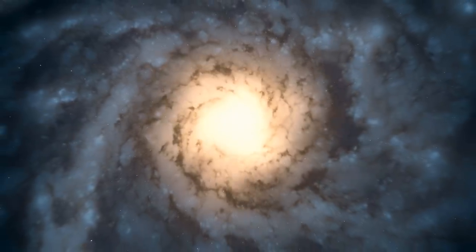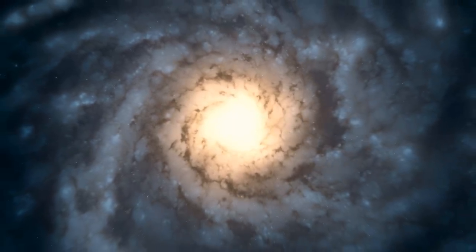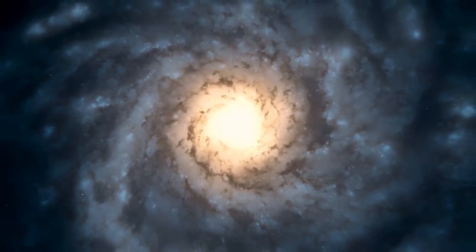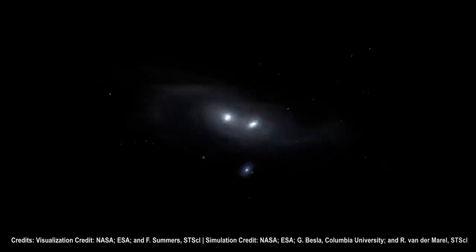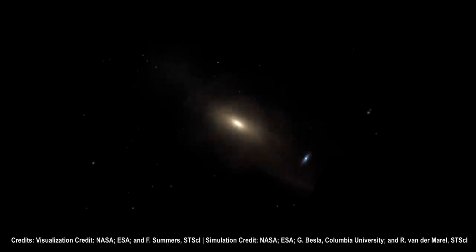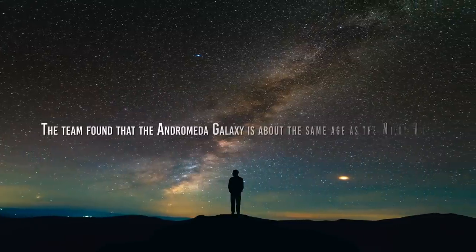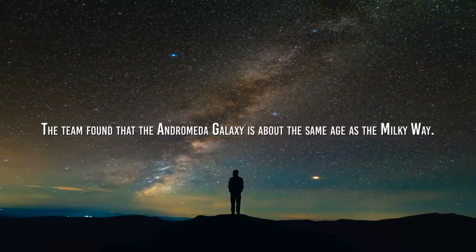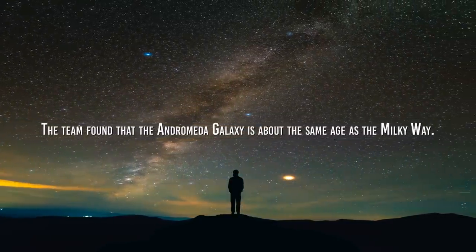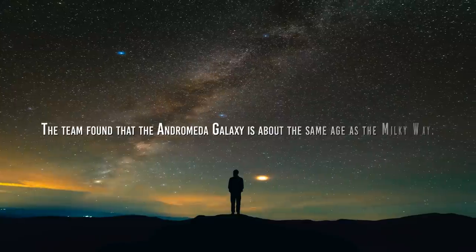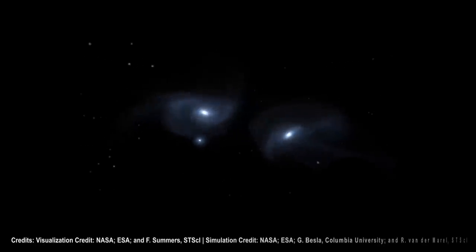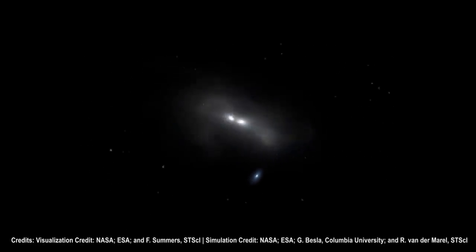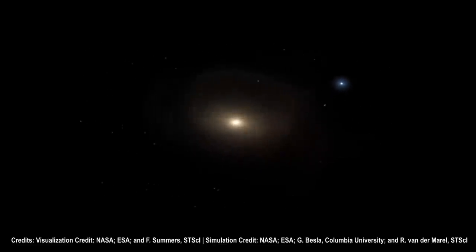By studying the number of RR Lyrae stars in the Andromeda Galaxy, Evans and Belokharov's team could estimate the galaxy's age, and thus the amount of time until the Milky Way and Andromeda Galaxies merge. The team found that the Andromeda Galaxy is about the same age as the Milky Way, and that the two galaxies will merge in the distant future in about 4.5 billion years. As the two galaxies get closer, they will interact gravitationally, eventually merging into a single galaxy.